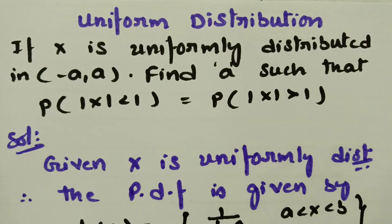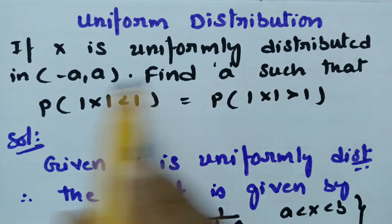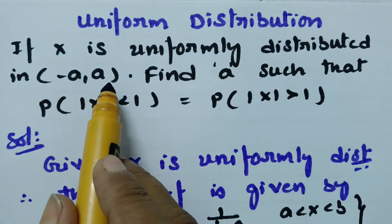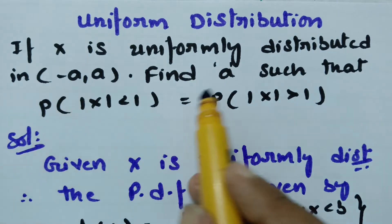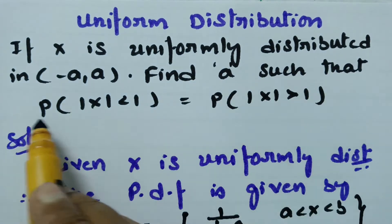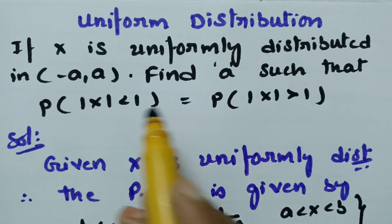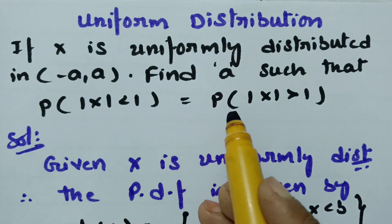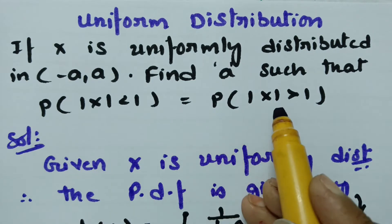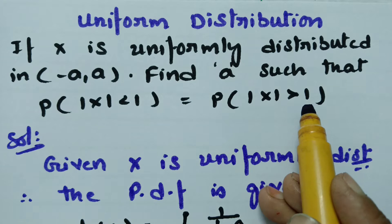This video is on uniform distribution. The problem here is: if x is uniformly distributed in the interval (-a, a), find 'a' such that the probability of |x| < 1 is equal to the probability of |x| > 1.